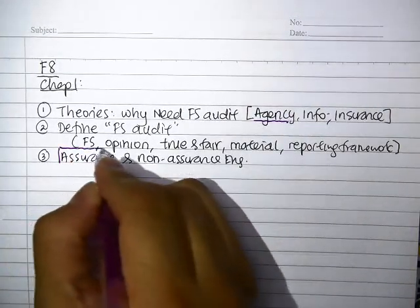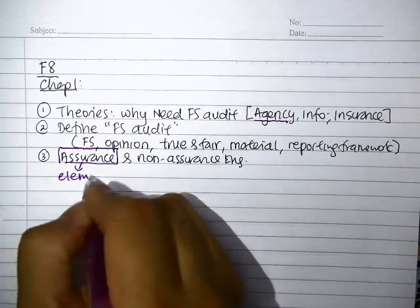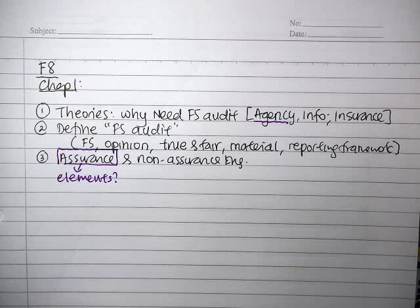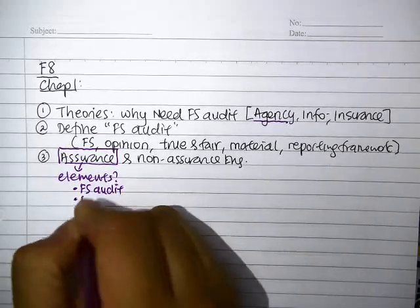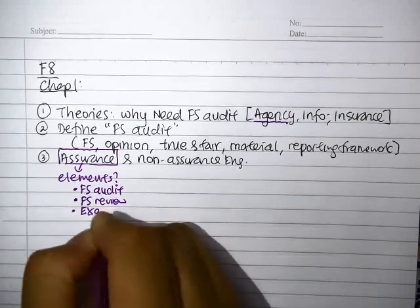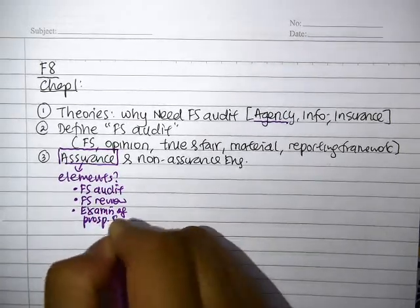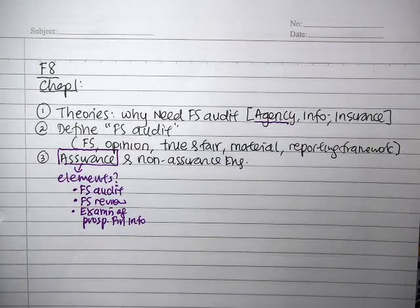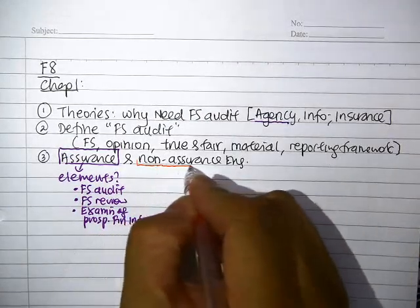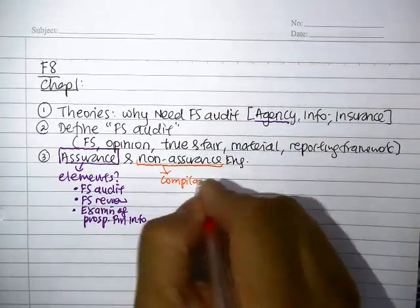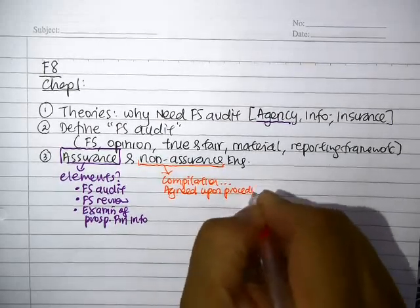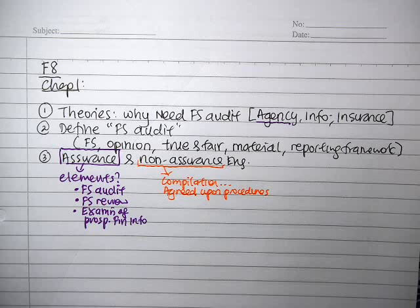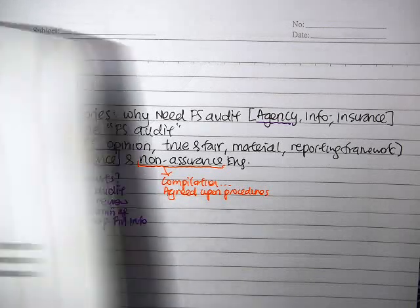When you call something an assurance engagement, you must recall what elements are in it. We gave examples such as audit, review, as well as examination of prospective financial information — these are examples of assurance engagements. For non-assurance, we gave examples like compilation of financial information as well as agreed-upon procedures. The important issue is you must be able to recall and understand all of these things.